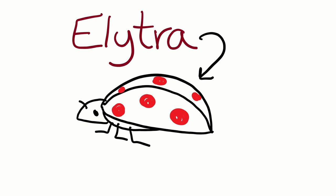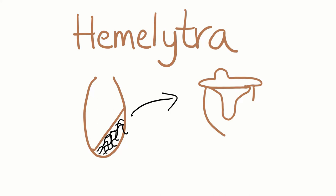As you may have guessed by the name, hemielytra are half elytra and half membranous wings. These wings are common in true bugs. If you can think of an insect's name that has the word bug in it as a separate word, that is likely a true bug. You can think of assassin bugs, seed bugs, and stink bugs.